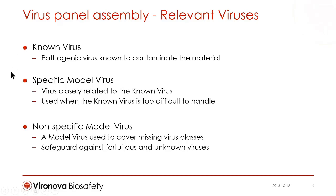In some cases, a known virus cannot be tested directly. This is the case for hepatitis C virus, which is difficult to grow in the lab. Instead, a closely related virus is used — this is the specific model virus. The third group is the non-specific model virus, which serves as a model to safeguard against unknown viruses.